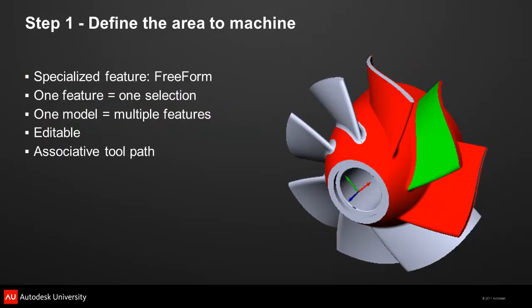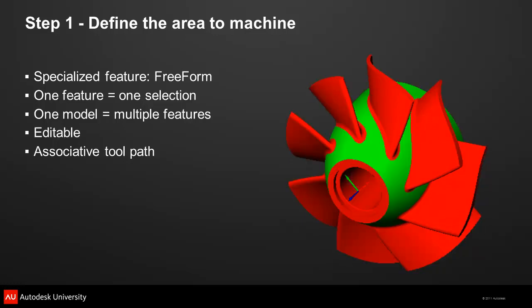In the first step, you define the area to machine in a specialized feature called a freeform feature. A freeform feature lets you select and save the surfaces to be machined, shown in green, and the surfaces to be avoided, as a single object. For this Blisk, separate features were created for the blade, the fillet at the base of the blade, and another feature for the hub. When you're ready to start programming, it's much easier to select these predefined features. An advantage to feature-based machining is that the feature can be reopened at any time to add or remove surfaces, and any machining operations placed on the feature are automatically updated when the feature is edited.